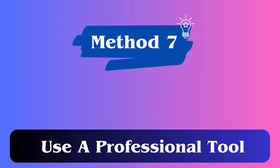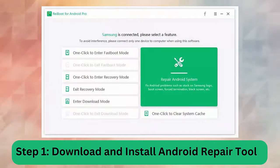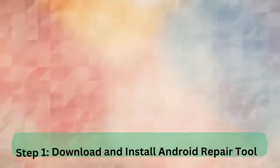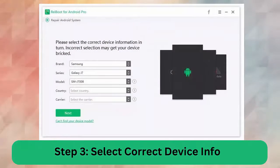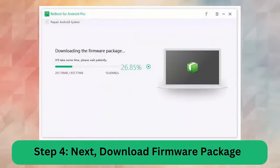Method 7: Use a professional tool. If you are looking for some advanced fixes, go for an Android repair tool. This is a highly suggested program that works effectively to fix the Greenline issue on Samsung devices with one click. Step 1: Download and install the Android repair tool. Step 2: Click the Repair Now option to go ahead. Step 3: Select the correct device info. Step 4: Download the firmware package. Step 5: Begin the Android repair system.